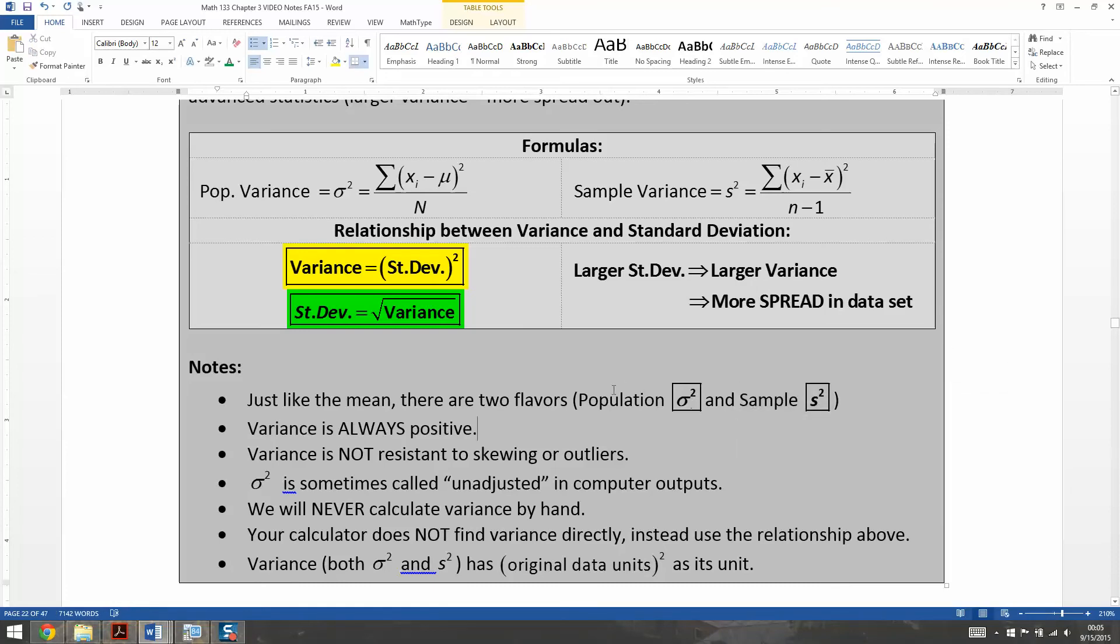Okay, but if you did, by some chance, have the whole population, then you'd use sigma squared as your variance.